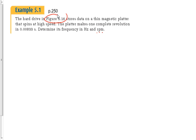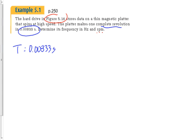What do we have given? 0.00833 seconds — the time it takes to complete one revolution. Out of frequency, period, and speed, what variable is that? It's the period: the time for one complete revolution, the time for one complete cycle.